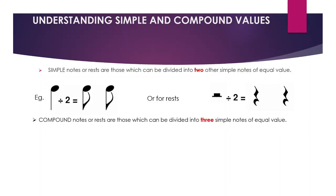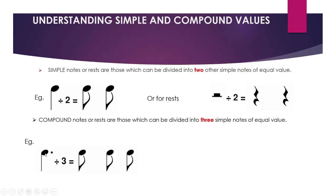Compound notes are those that can be divided into three notes — they don't split in half, they split into three. Compound notes are always dotted notes. A dot increases a note by half of its original value. So if you cover up the dot it's the same as the note above, which can be split in half. The dot is half of what it is, so a dotted crotchet becomes three quavers. If anyone needs, I can do this on the whiteboard as well.